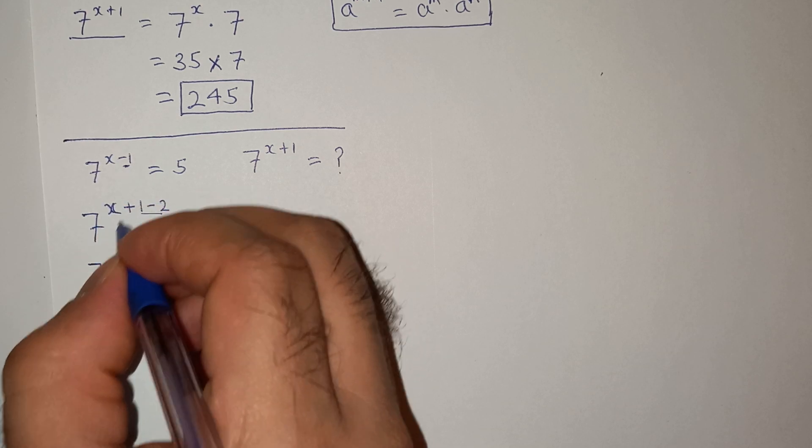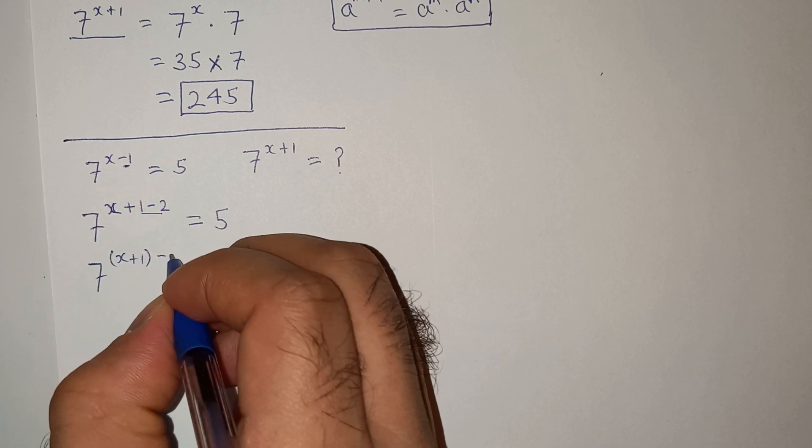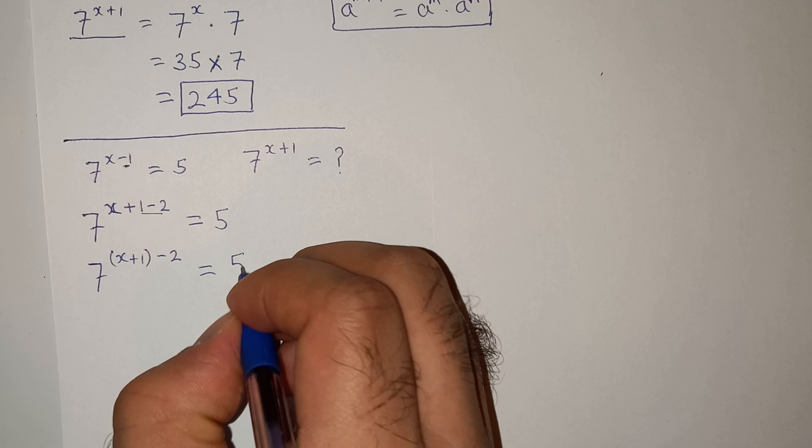Now let's take this x plus 1 in the bracket and this minus 2 equals to 5.